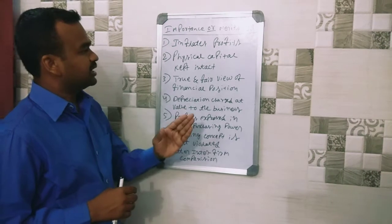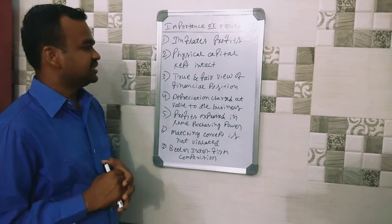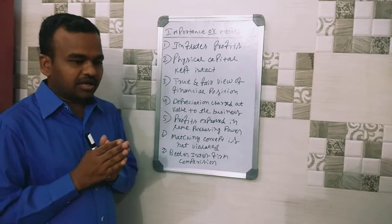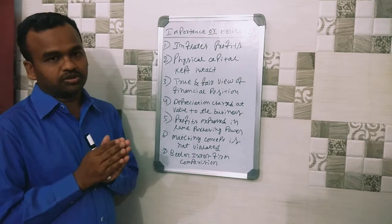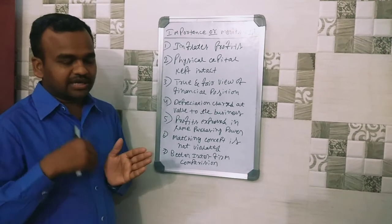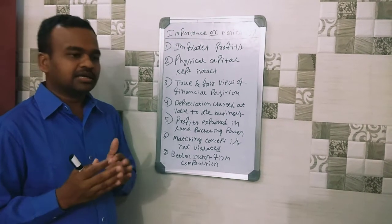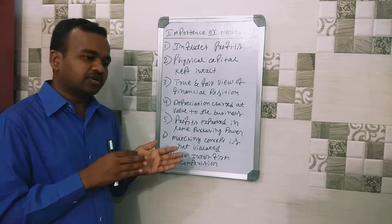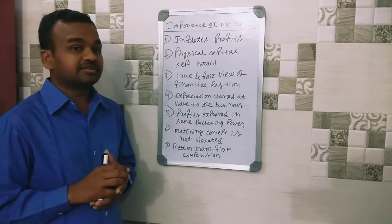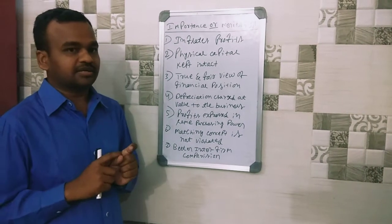Next point: physical capital kept intact. If you have values at the current rate — for example, assets at the current rate — when assets are replaced, you may have a loss. In historical accounting, you have a shortage of funds and shortage of capital or profits.